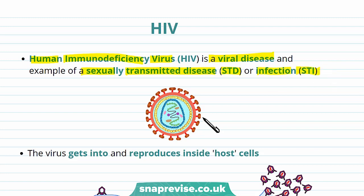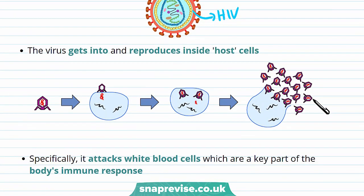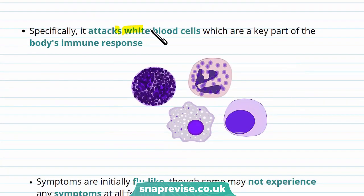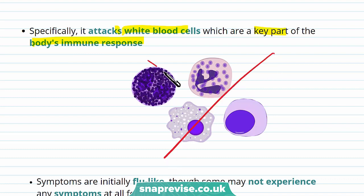This is what HIV looks like. The virus first gets into and reproduces inside host cells, using the cell's own machinery to replicate. This replication causes damage to the cells, causing disease. Specifically, what HIV does is attack white blood cells, which are a key part of the body's immune system — they fight against pathogens that cause disease. As HIV attacks white blood cells, they're no longer able to function correctly, meaning the body is less able to fight off disease, causing someone to become ill.